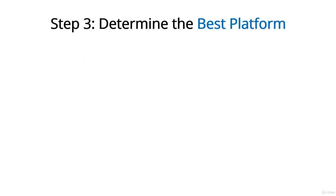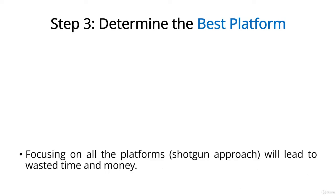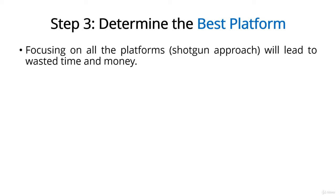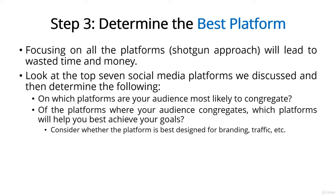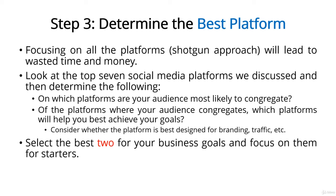Step 3: Determine the best platform. There are a lot of social media platforms currently online and new ones are springing up all the time. If you use the shotgun approach, you're just going to end up wasting time and money. Instead, take a more methodical approach. There are seven main platforms to consider: LinkedIn, Facebook, Twitter, Instagram, Google+, YouTube, and Pinterest. Your mission is to determine on which platforms your audience is most likely to congregate, and of those, which platforms will best help you achieve your goals — looking at whether each is best designed for branding, driving traffic, and so on. For starters, select just two platforms and focus on those.